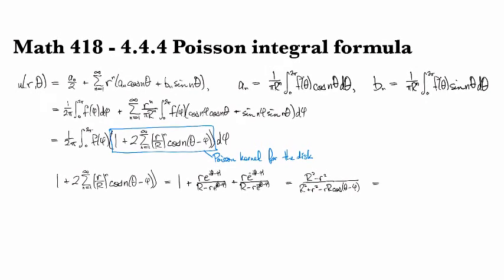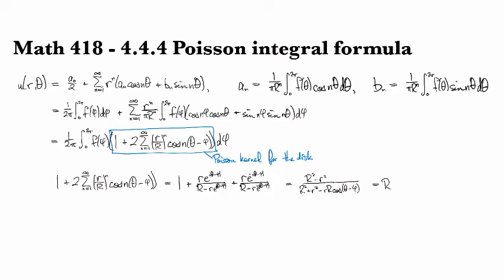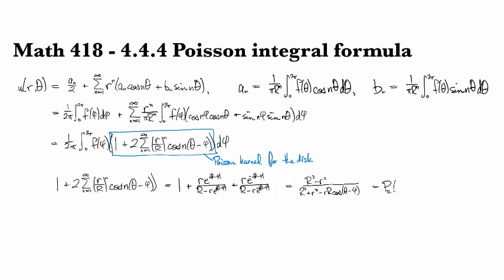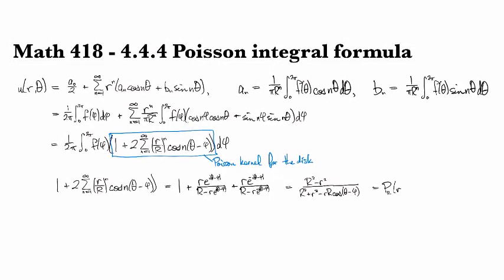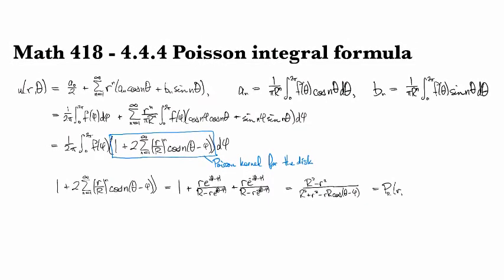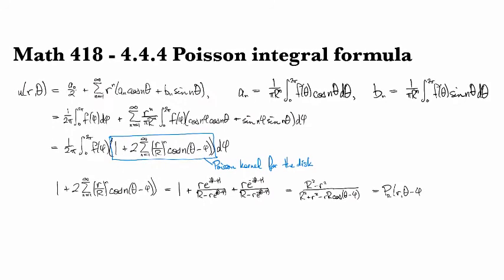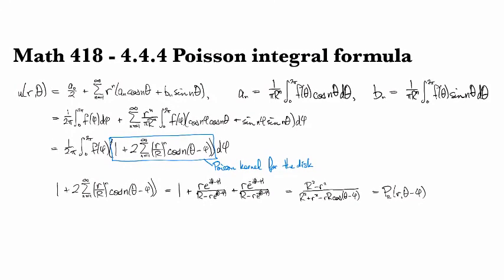And so this is one form, or the polar form rather, of the Poisson kernel. So the Poisson kernel for radius R with coordinates r,θ, where the angle variable is currently equal to θ - φ.